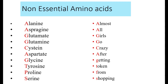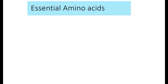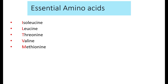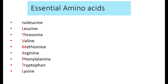Now, what are essential amino acids? These are: isoleucine, leucine, threonine, valine, methionine, arginine, phenylalanine, tryptophan, lysine, and histidine. These are the names of the essential amino acids.